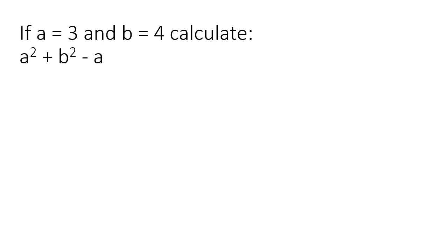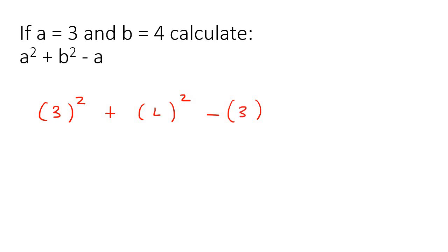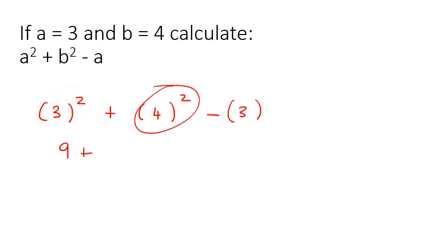Here is the next one. They tell you that a is 3 and b is 4. Go put brackets wherever you see a variable. For a, you see there's a bracket and then the 2 is on the outside. Then you put a bracket and the 2 is on the outside for the b part. Then there's a minus — the minus a mustn't go in a bracket, only the a is in the bracket. So all of the a's are going to be a 3, and the b is a 4. So 3 squared is 9, 4 squared is 16, and then minus 3. That would eventually give us 22.